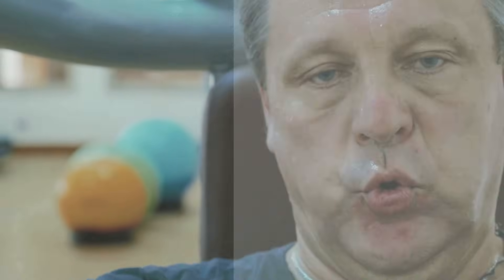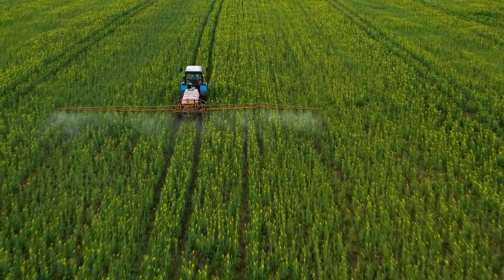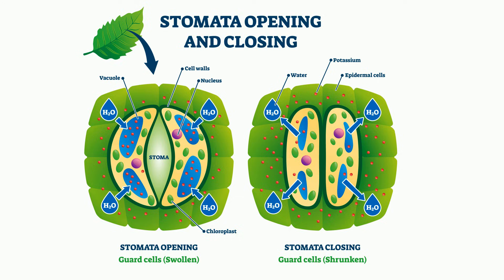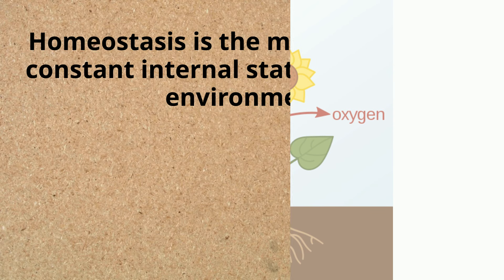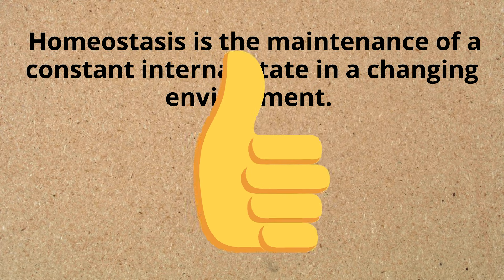As oxygen levels increase, your breathing rate will slow. Plants also maintain homeostasis. A plant will use stomata on their leaves to maintain proper water levels, thus ensuring optimum conditions for photosynthesis. In summary, homeostasis is the maintenance of a constant internal state in a changing environment.